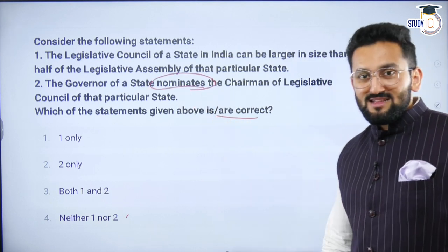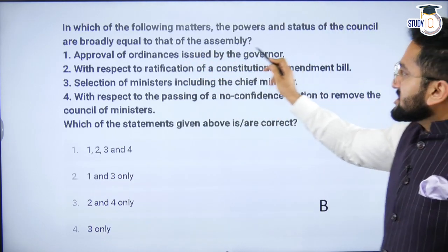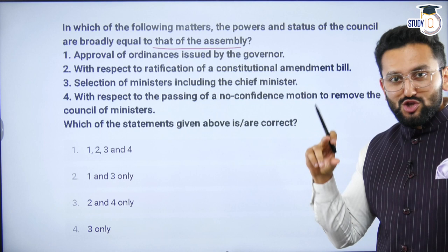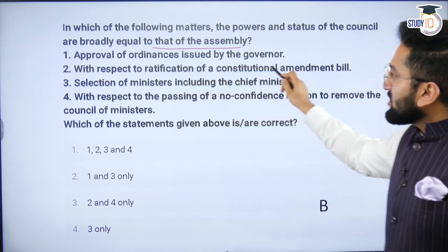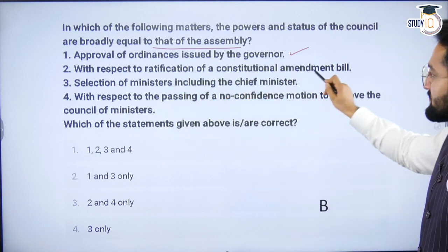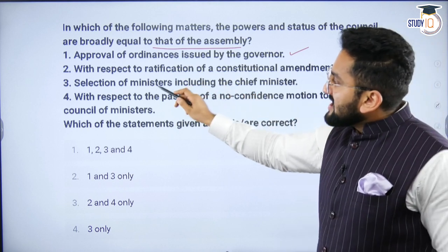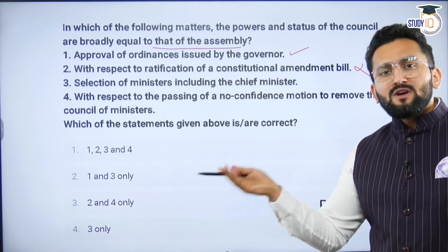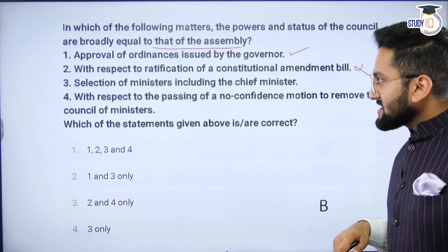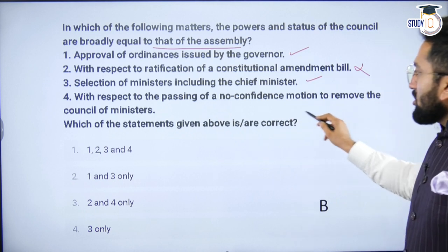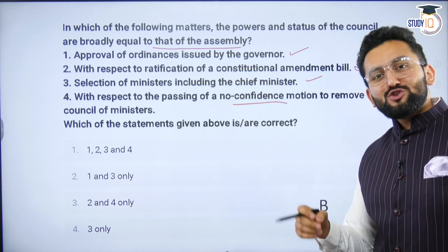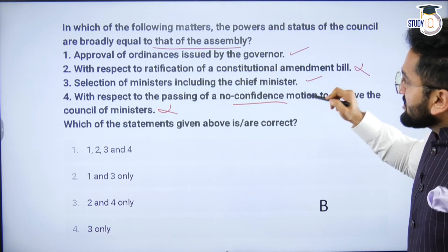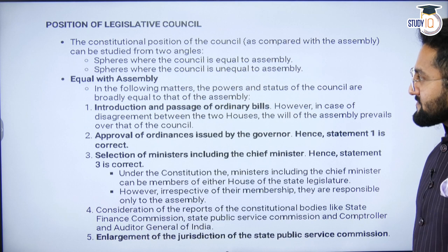The chairman of the legislative council is an elected position, not appointed or nominated by the Governor. Next question: 'In which of the following matters are the powers and status of the council broadly equal to that of the assembly?' Approval of ordinances issued by the Governor — they have equal say. With respect to ratification of constitutional amendments, only the legislative assembly has a say. Selection of ministers including Chief Minister — a person can be a minister or CM even if they are a member of the state legislative council, like Yogi Adityanath was a member of state legislative council. With respect to passing of a no-confidence motion — no, that is a tool of the legislative assembly, not the legislative council. So one and three are correct — making B the answer.